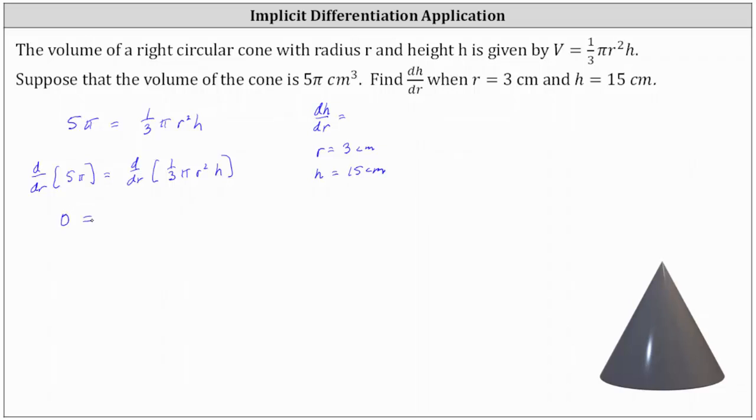On the right, to differentiate with respect to r, we'll have to apply the product rule. Let's let the first function be one-third π r squared, and the second function be h.